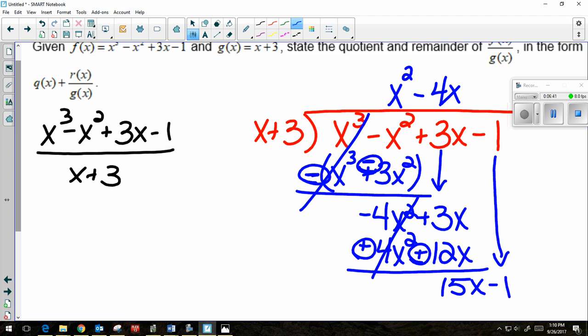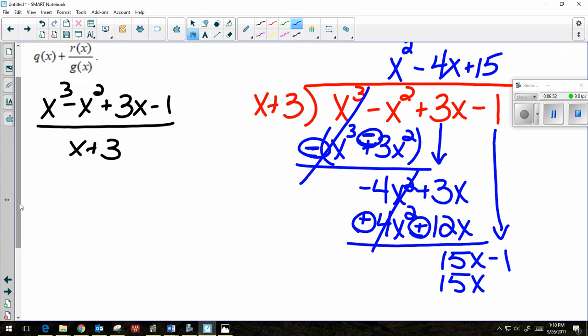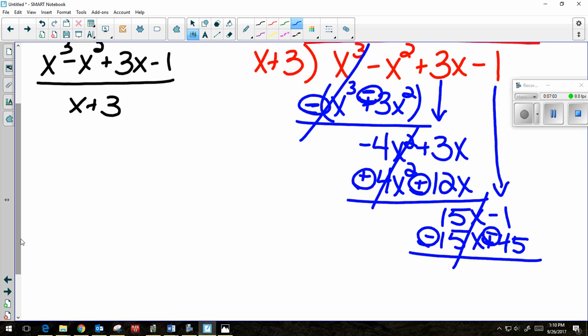What times x gives you 15x? A positive 15. So 15 times x is 15x. 15 times 3 is 45. And now we're subtracting. So I have to subtract each piece. 15x minus 15x cancels. -1 minus 45 is -46.